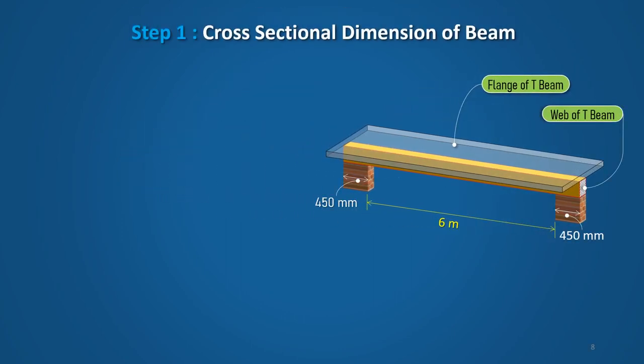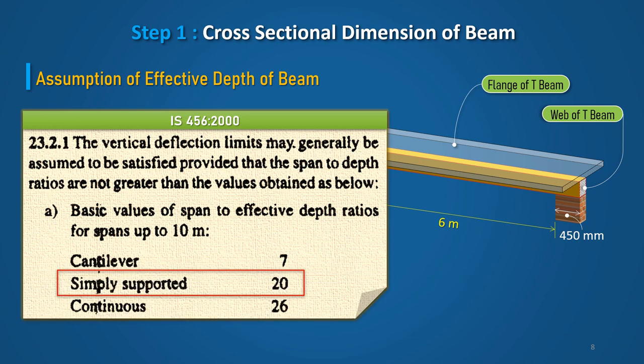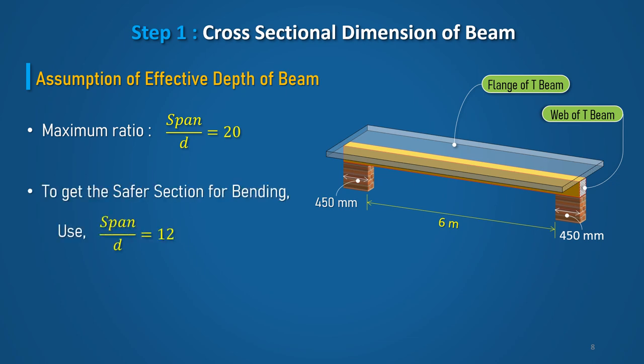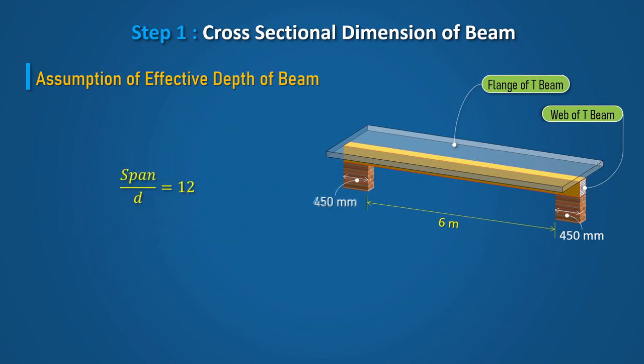Let us start with Step 1 by deciding the initial cross-sectional dimensions of the T-Beam. The initial effective depth of the beam can be assumed based on vertical deflection criteria by referring to clause 23.2.1 of IS456, which includes the maximum values of span-to-effective-depth ratios. For a simply supported beam, the maximum value of the span-to-depth ratio is 20. To get a safer section for bending, we can assume it between 12 to 15. For this problem, let us adopt the span-to-depth ratio equal to 12.